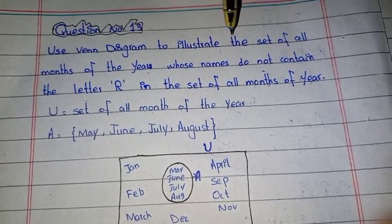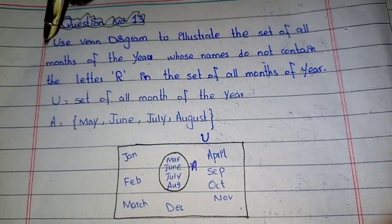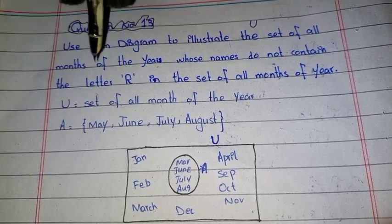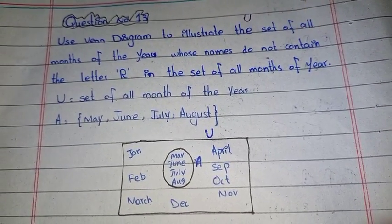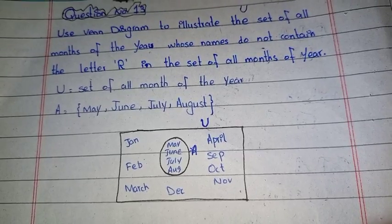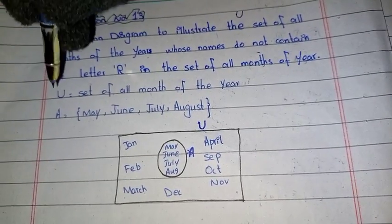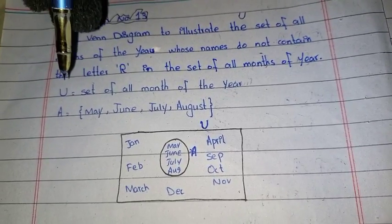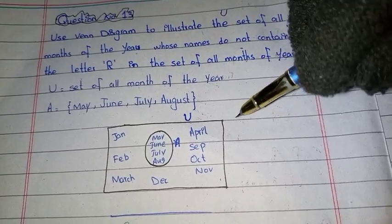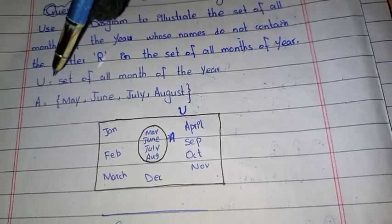Next, we will use a Venn diagram to illustrate the set of all months of the year. The universal set will be all months of the year. We need to identify the subset whose names do not contain the letter R. We draw the Venn diagram and create the first set of all months of the year, then draw a circle containing the elements that are in set A.